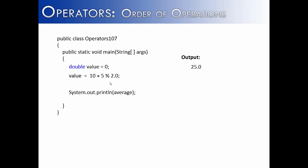The multiplication would happen first and then the modulus division. So 10 times 5 would be 50, modulus divided by 2 would be 0. The modulus division would happen though before adding or subtracting if that were in the equation.